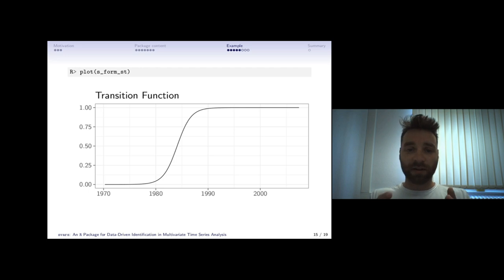We know from the smooth transition model that we model a transition from one covariance state to another. This here is an illustration of the transition function for this particular example.